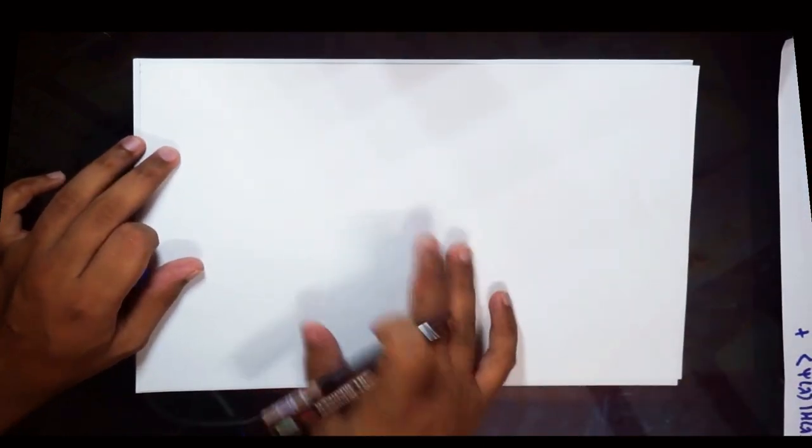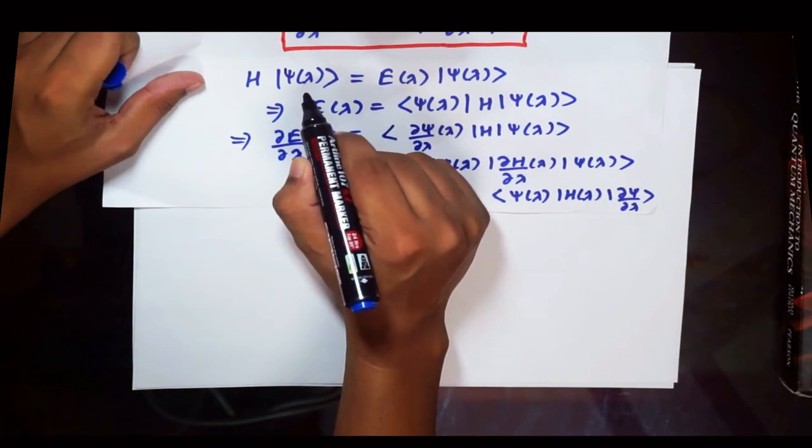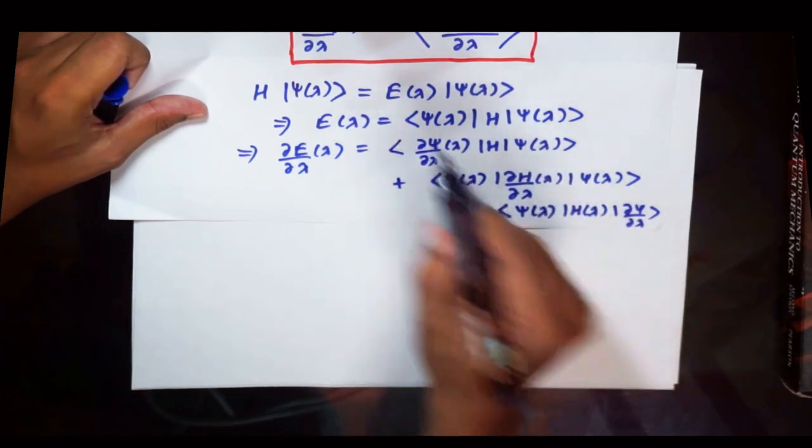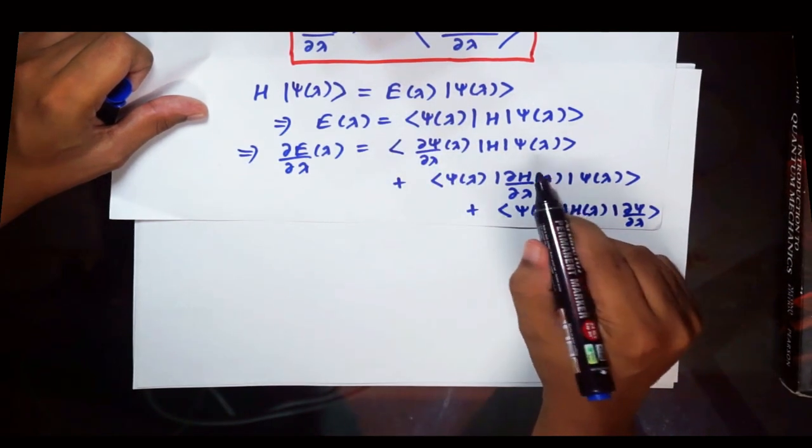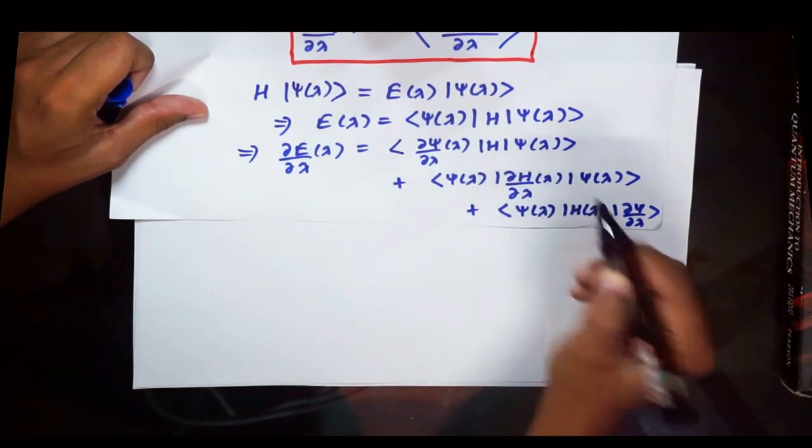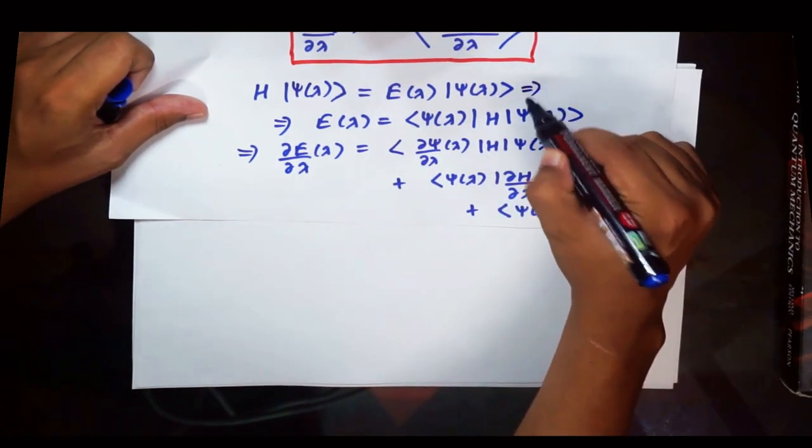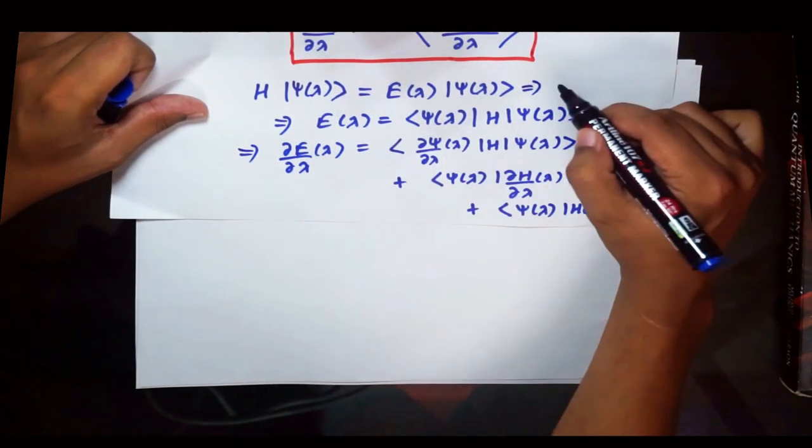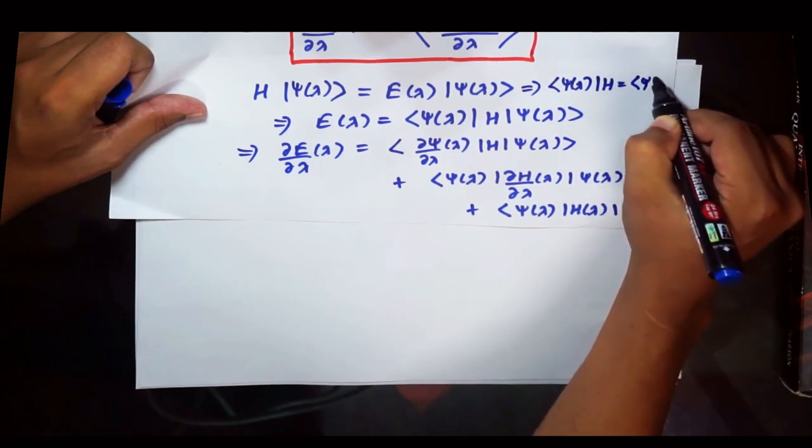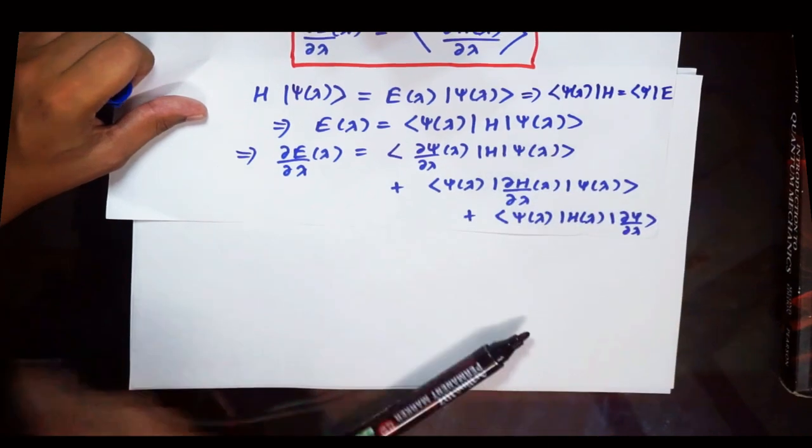So in the next step, what we are going to do is we are going to be utilizing this relation. That is, when Hamiltonian operates on its eigen function psi of lambda, then we get psi of lambda multiplied by the eigenvalue, that is the energy. So we are going to plug this relation here in this equation. So here we can apply H upon psi of lambda and get E lambda times psi lambda. And similarly we will apply this equation here by using the adjoint of this equation. So basically from this equation you can get psi of lambda operated upon by Hamiltonian would give psi times E. Right, so we will use these two relations in this term basically.